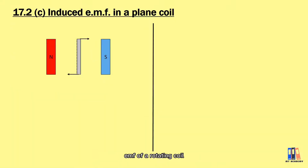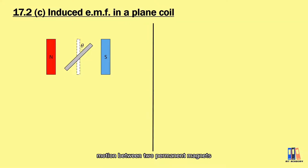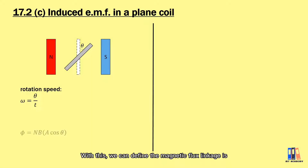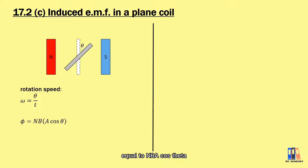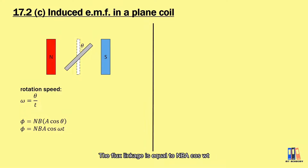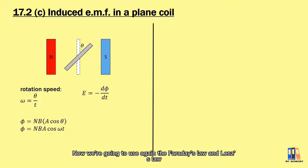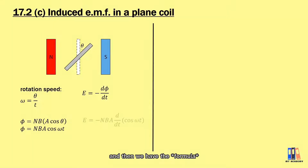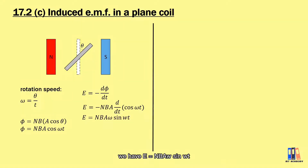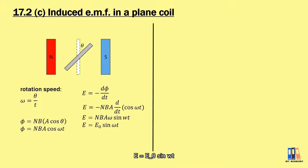Let us derive the induced EMF of a rotating coil in a magnetic field. The coil rotates in circular motion between two permanent magnets, and the angular velocity is defined as ω = θ/t. We define the magnetic flux linkage as NBAcos(θ), and substitute the angle with ωt, so the flux linkage equals NBAcos(ωt). Applying Faraday's law and Lenz's law, E = −dΦ/dt, we get E = −NBA multiplied by the derivative of cos(ωt), giving E = NBAω sin(ωt). This simplifies to E = E₀ sin(ωt), where E₀ = NBAω is the amplitude or maximum value.